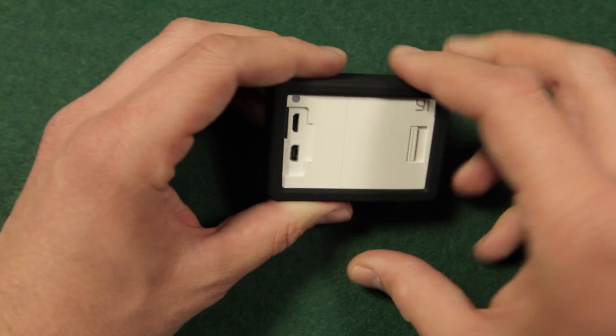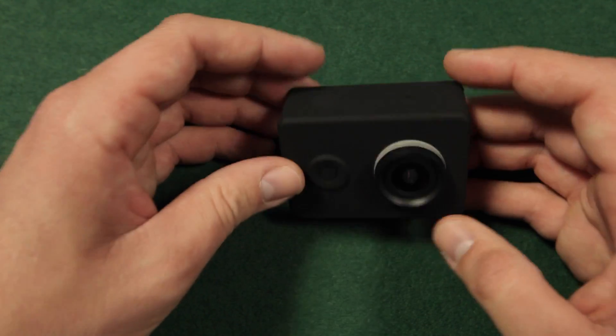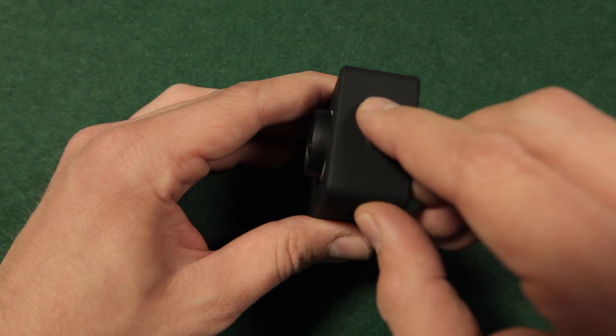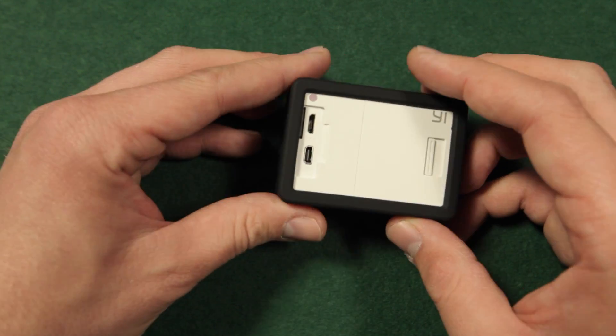All three buttons—the power button, trigger, and wifi button—are elevated and work fine when the case is on the camera.